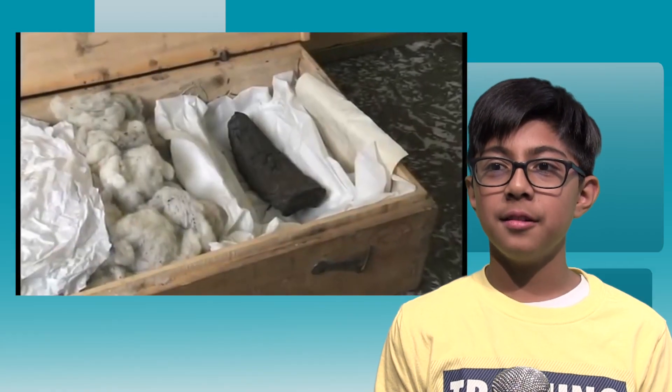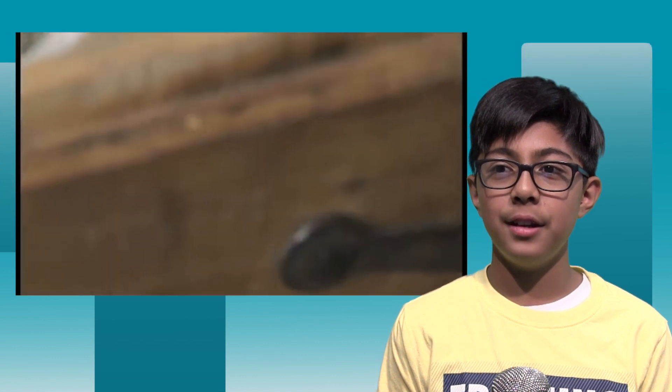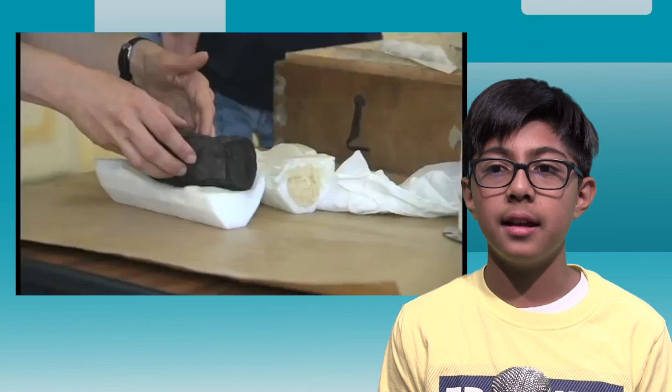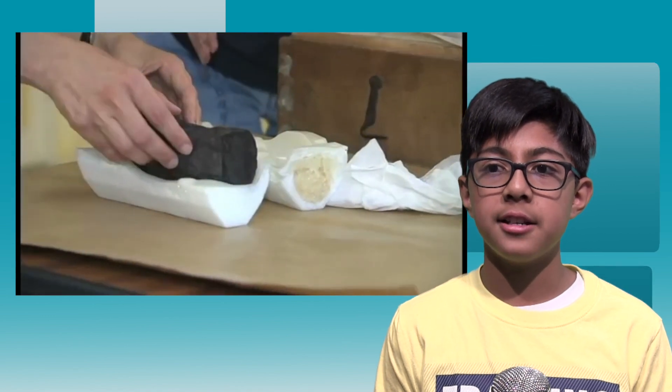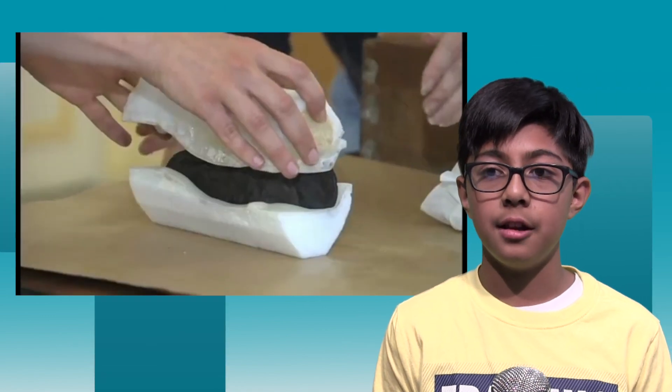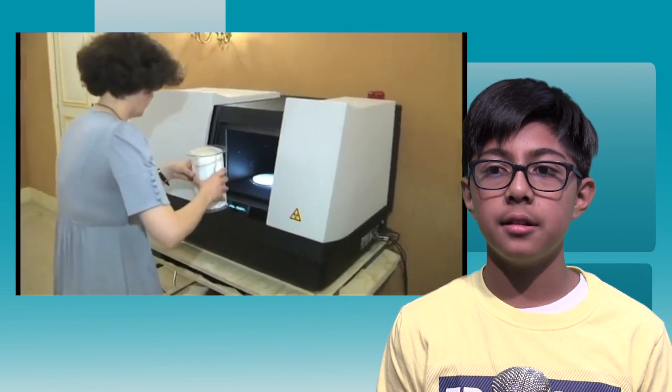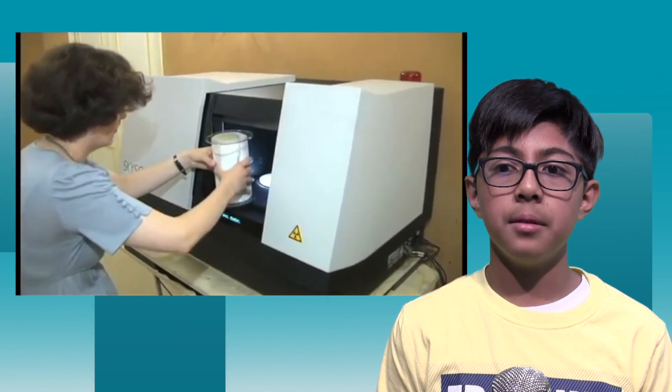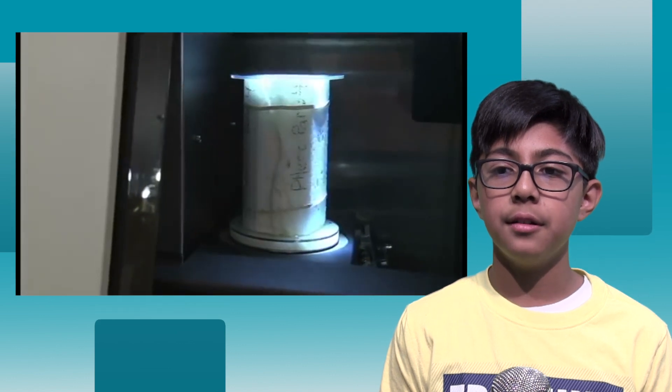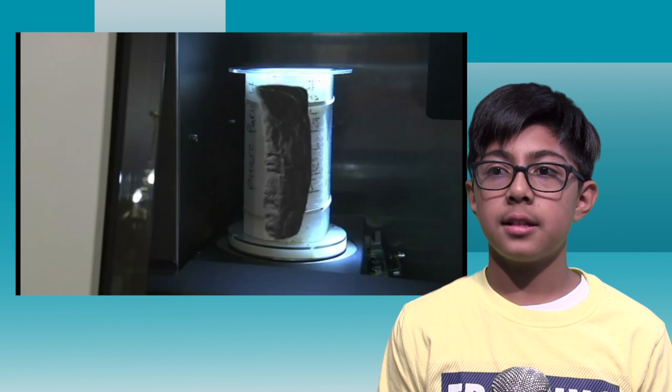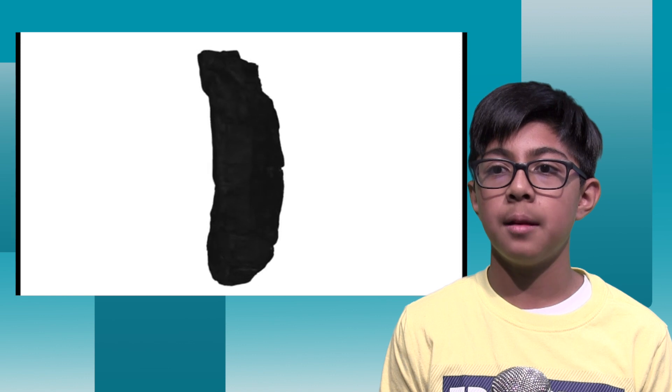Scientists hope to digitally unravel scrolls charred by Vesuvius with light 10 billion times brighter than the sun. Scientists from the University of Kentucky say they're working to perfect a technique to digitally unravel fragile ancient texts that haven't been read in nearly 2,000 years. In a synchrotron, the diamond light source accelerates electrons to nearly the speed of light so that they emit light 10 billion times brighter than the sun.